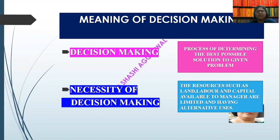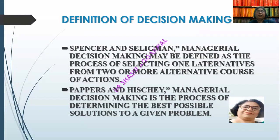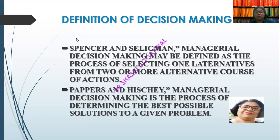What is the necessity of decision making? What is the definition of decision making? Sensor and Sleeman have defined it: managerial decision making may be defined as the process of selecting one alternative from two or more alternative courses of action. Given different conditions, we have to select the best alternative. Managerial decision making is the process of determining the best possible solution to a given problem.